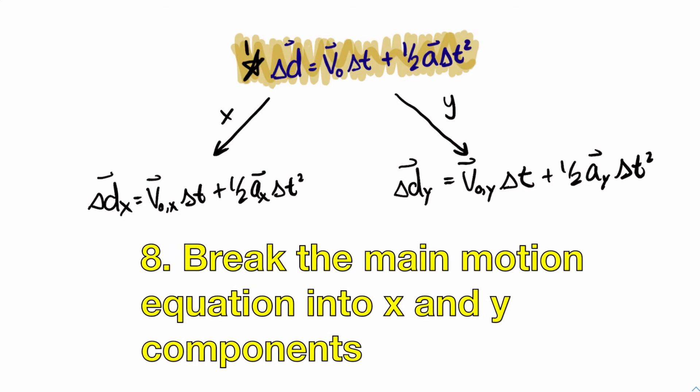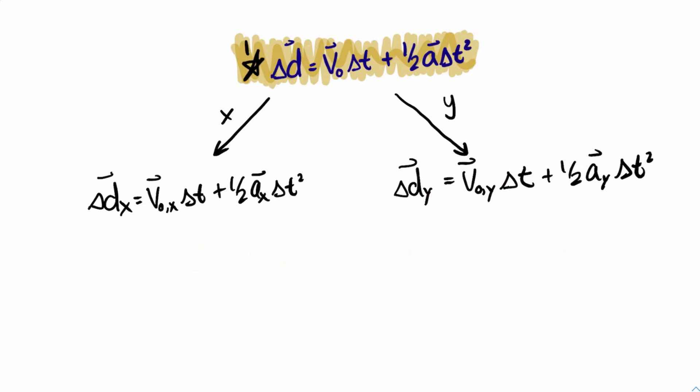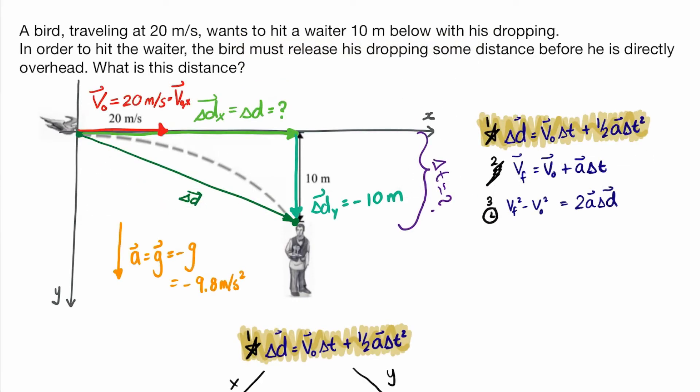We start from the main equation and since it's a vector equation we rewrite it along the x component and then the y component, adding the index x or y to indicate horizontal versus vertical motion. Recalling the question: a bird at 20 m/s wants to hit a waiter 10 meters below. The horizontal distance we're looking for is delta Dx, which is our unknown.